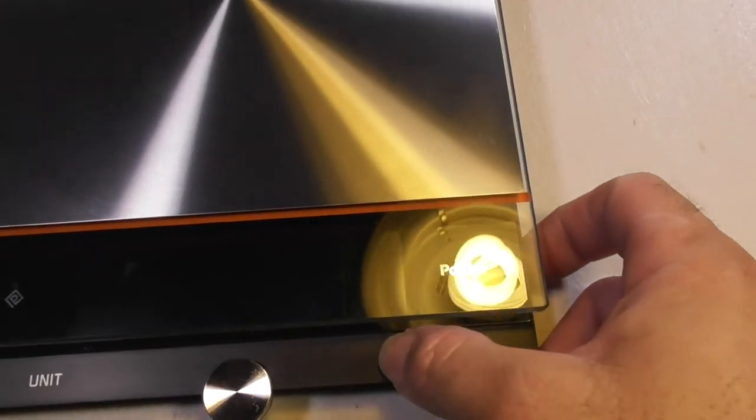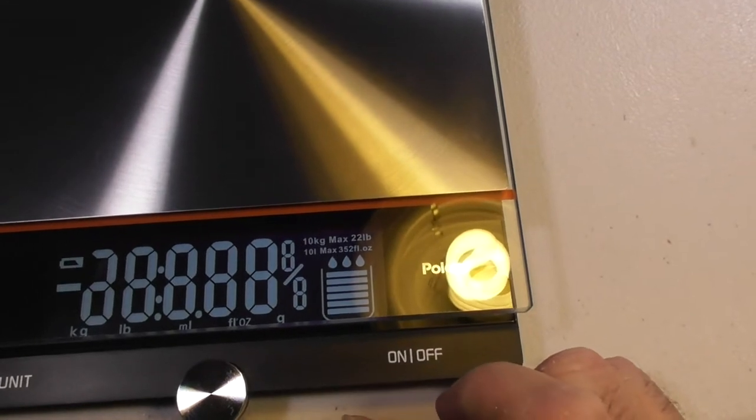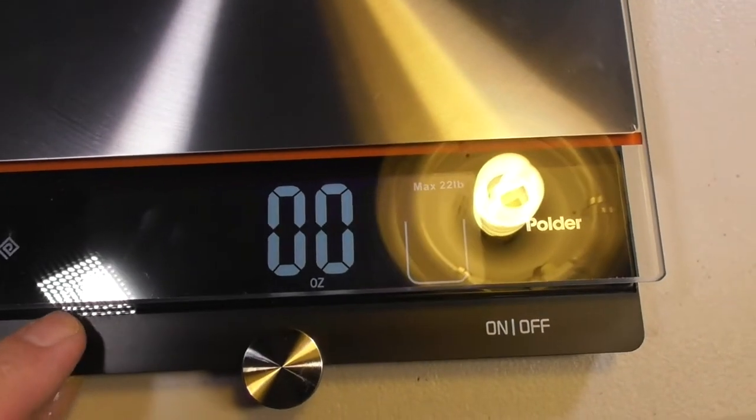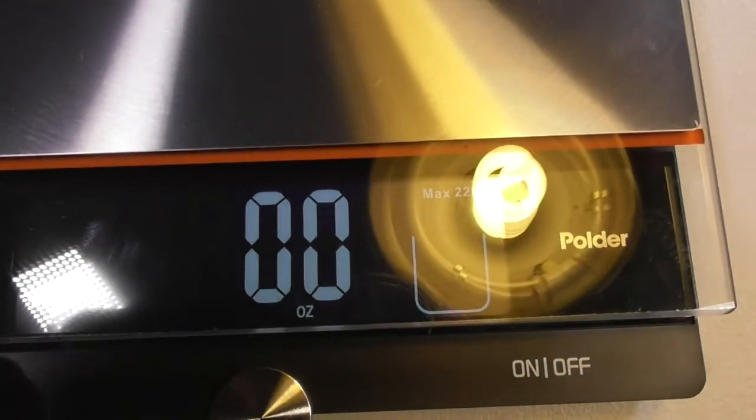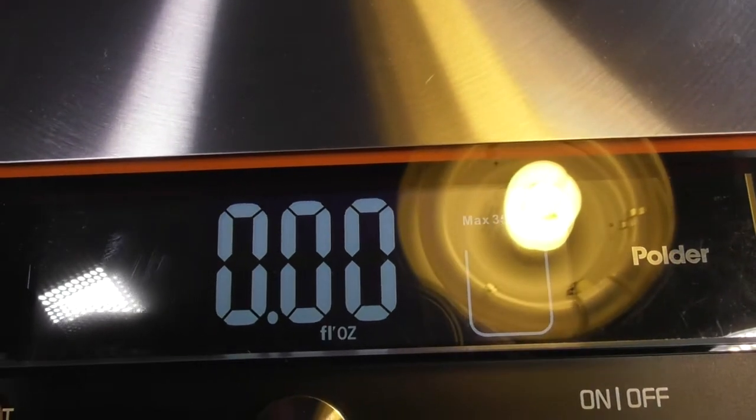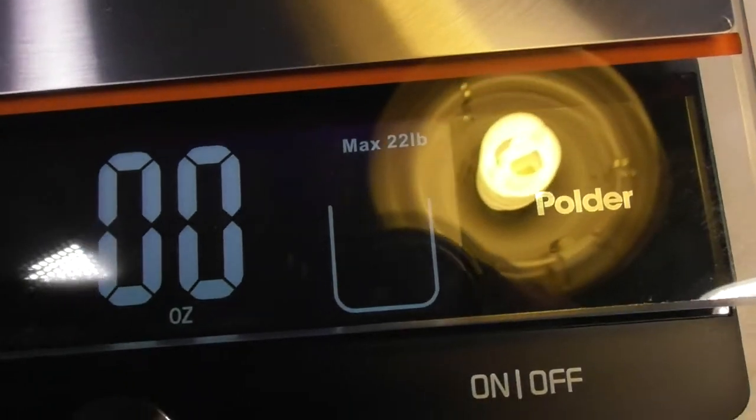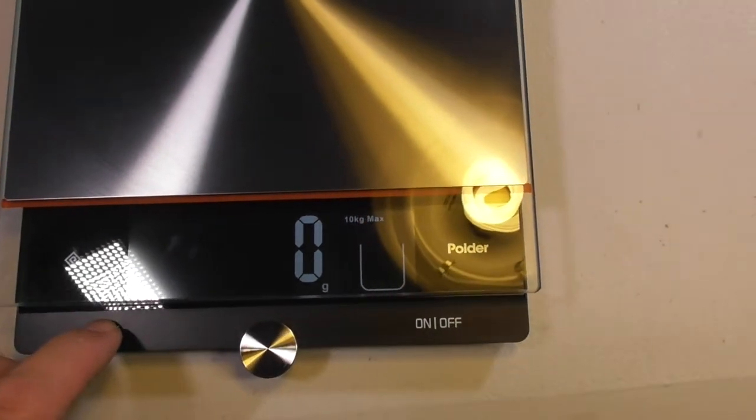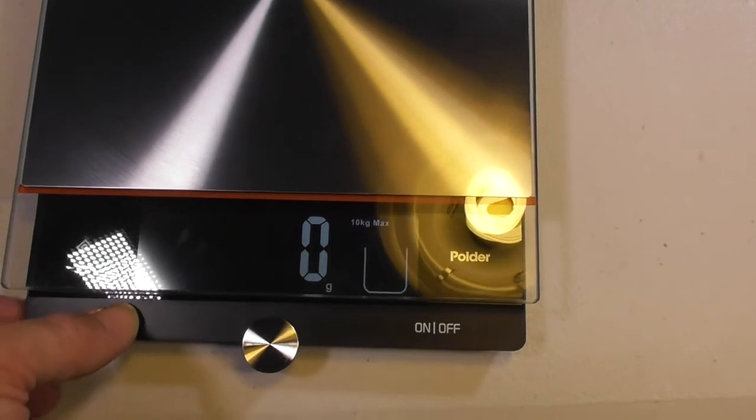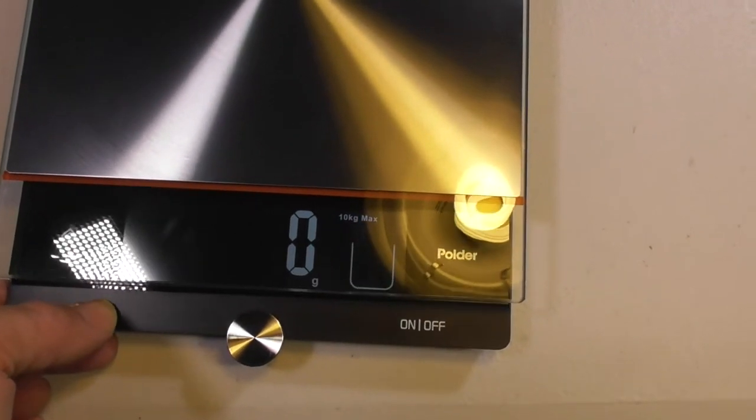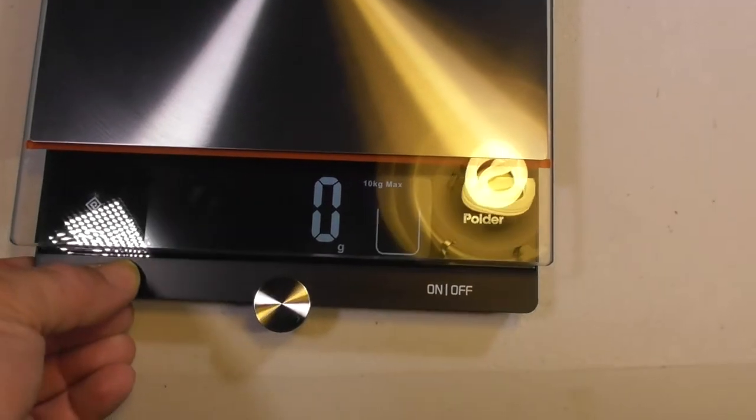I pressed on and it came on. And it zeroed out. That's showing ounces. Now you should be able to press the unit button and change the reading. The switch is extremely difficult to register. I don't understand why this is not changing over.